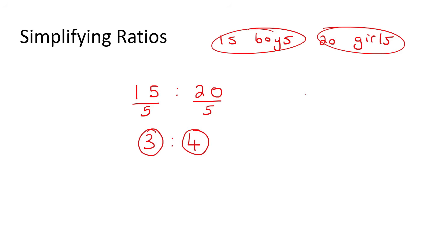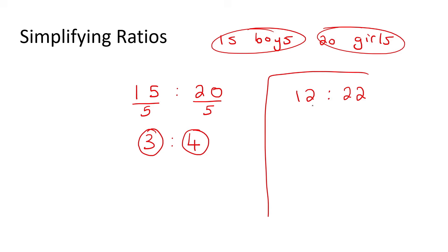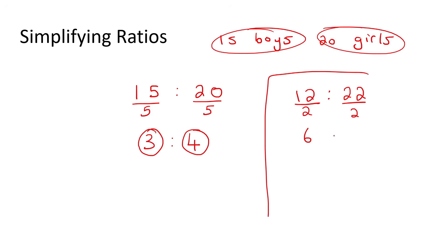Let's do another one quickly. Let's say we have 12 and 22 and you have to simplify this. The number two can definitely go into both. Sometimes there's more than one number you could use, and it doesn't really matter which one. 12 divided by two is six, and 22 divided by two is 11. There is no number that can go into both six and 11, so that would be the final answer.